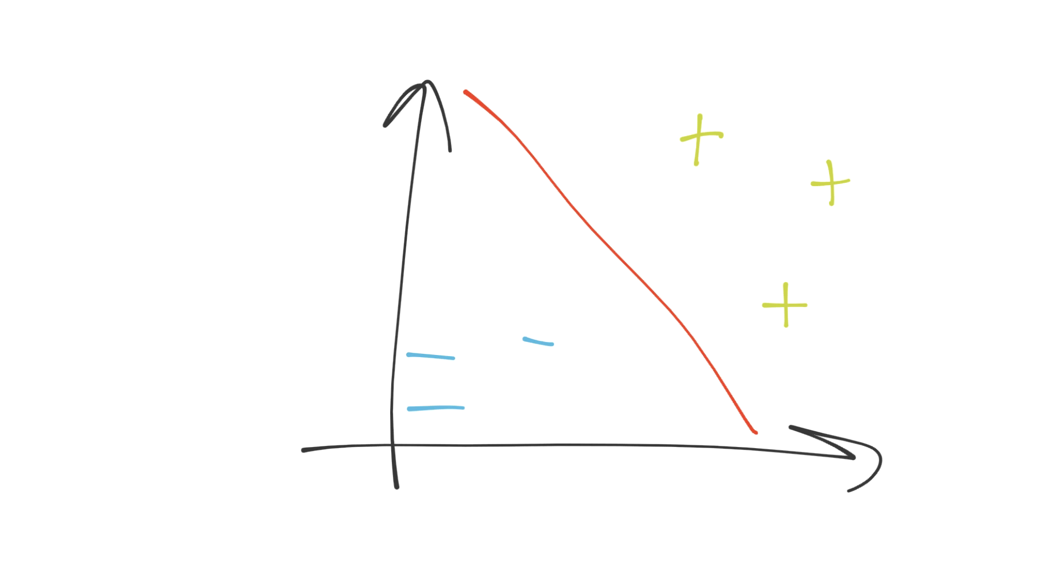The way that a support vector machine is going to classify new points is by first taking the vector that points perpendicularly to the separating hyperplane. That would be vector w. And then let's say you've got an unknown data point, and it's also a vector from the origin. What you're going to do is project vector u onto w. And you're going to find out, is vector u basically on the left-hand side or the right-hand side of the hyperplane. It just depends on what your perspective is. But what side of the hyperplane is it on?